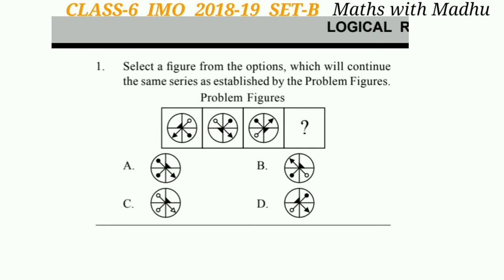Question 1. Select a figure from the options which will continue the same series as established by the problem figures. Look at the problem figure. The figures are moving in a 45-degree anticlockwise direction. So if we move the third figure 45 degrees anticlockwise, the fourth figure will be option B.